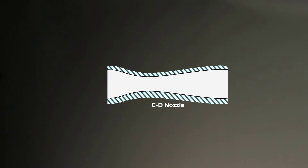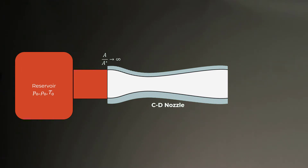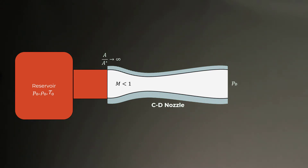Let us now understand a generic 1D flow through a CD nozzle. Consider a CD nozzle with very high area ratio at the inlet. The inlet station feeds from a large reservoir operating at stagnation conditions of P0, rho0, and T0. When the ambient or back pressure at the exit of the nozzle is small enough, a supersonic flow will be established. In the converging section, the flow is always subsonic and the exact value depends on the local area ratio. At the throat, the area ratio is 1, that is, AT is equal to A*, and therefore the flow attains a sonic velocity.